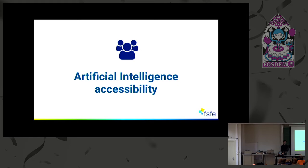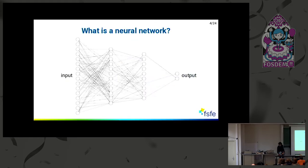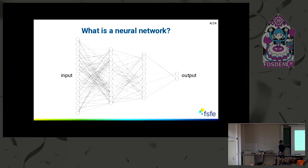First I will talk about accessibility in artificial intelligence. To start, I will introduce just basic concepts about neural networks. What I say applies to neural networks, but also to other algorithms. How it works is that you have the input on the left, the output on the right, and you have tiny neurons that are organized into layers. The input goes through the network and to the output on the right.